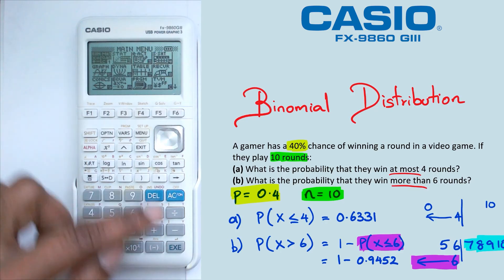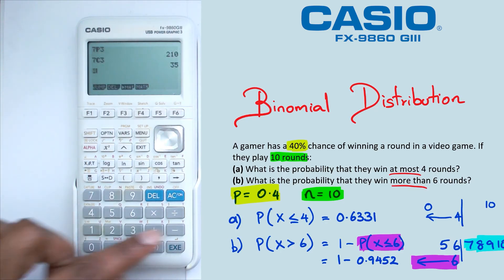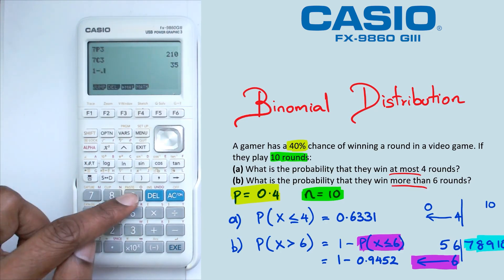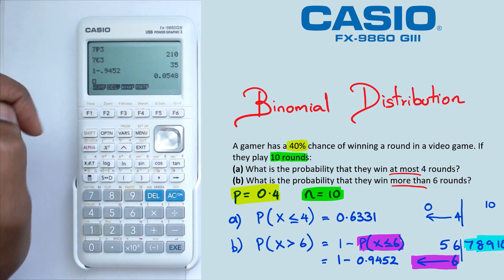And then what we need to do is go back into the normal mode, and we're going to go one minus 0.9452. And that's going to give us 0.0548. So that 0.0548 is the probability of X greater than six. So that's when X equals seven plus eight plus nine and plus 10.